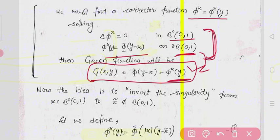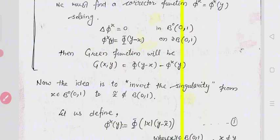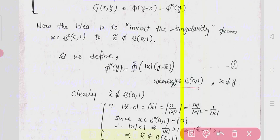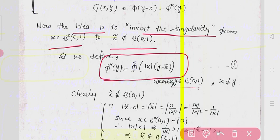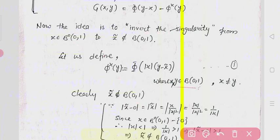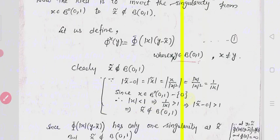We need to find φ(x, y) first in the unit ball. The idea is to invert the singularity from the point x in B°(0,1) to x̃, which does not belong to B(0,1). If x belongs to B°(0,1), then x̃ does not belong to the unit ball. We then define φ(x, y) = Φ(|x| · (y − x̃)), where x, y belong to the unit ball and are different.